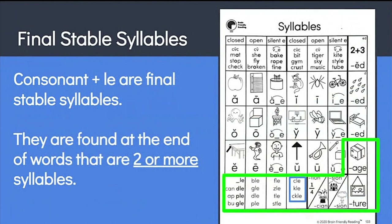CLE, KLE, and CKLE are called consonant LE syllables, and they're found on the bottom of the syllables chart in the sideways L-shaped section. This section includes all of the other final stable syllables like SHUN and CHUR and IDGE and ZHUN. Final stable syllables are all found at the ends of words that are two or more syllables.